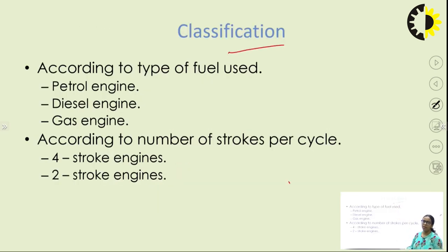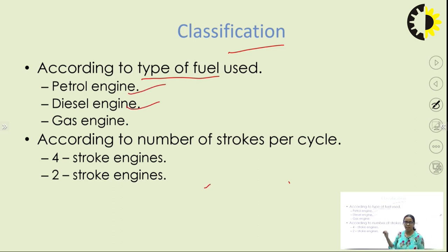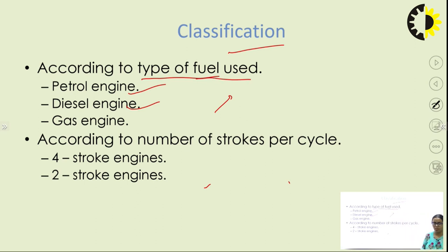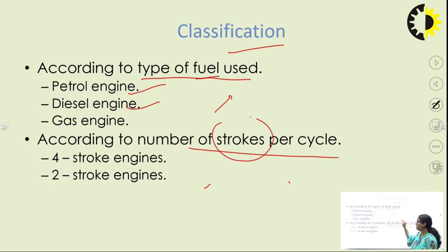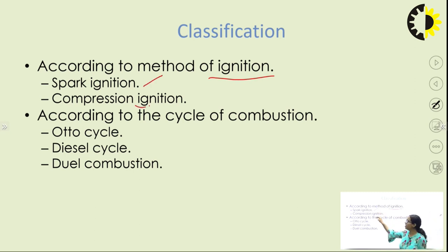Now let us talk about the classification of internal combustion engines. On different bases: first, according to the type of fuel used, we can have a petrol engine, diesel engine, or gas engine. Next, according to the number of strokes per cycle — there are two types: four-stroke engines and two-stroke engines. Another classification is based on the method of ignition: spark ignition engine and compression ignition engine.